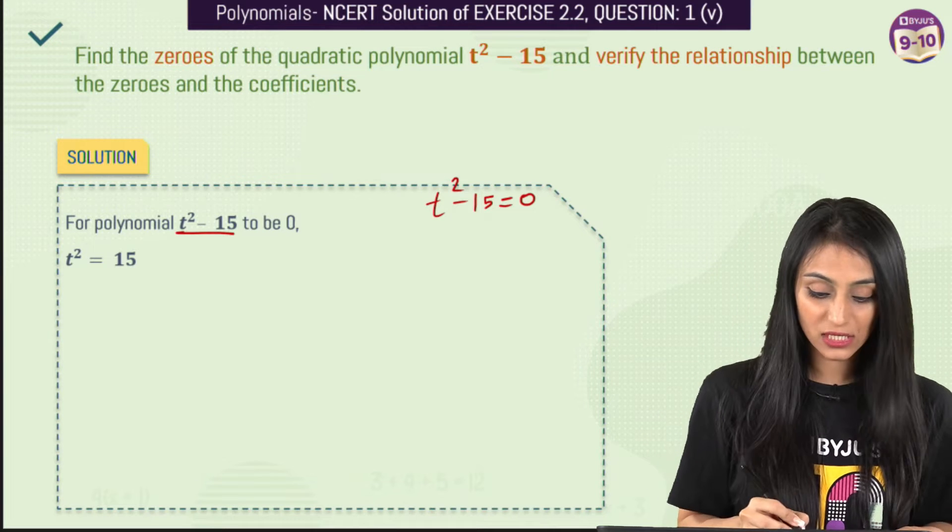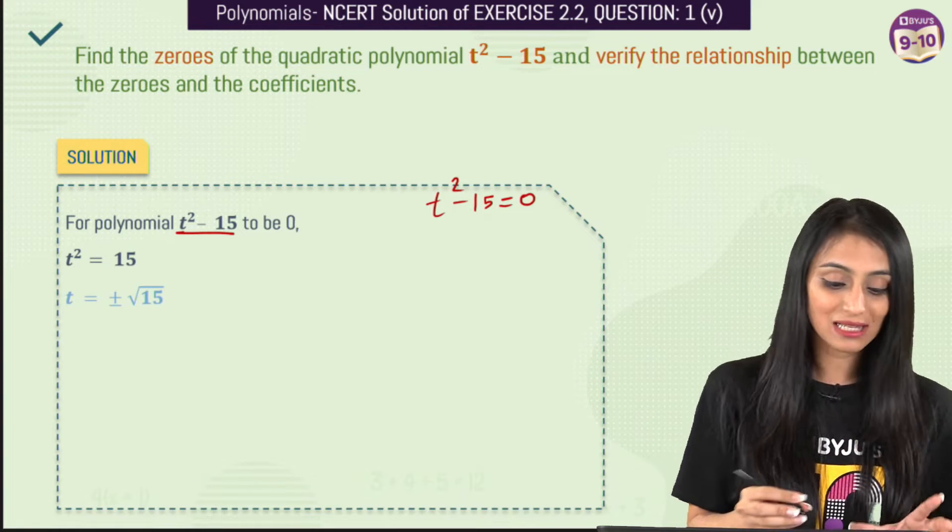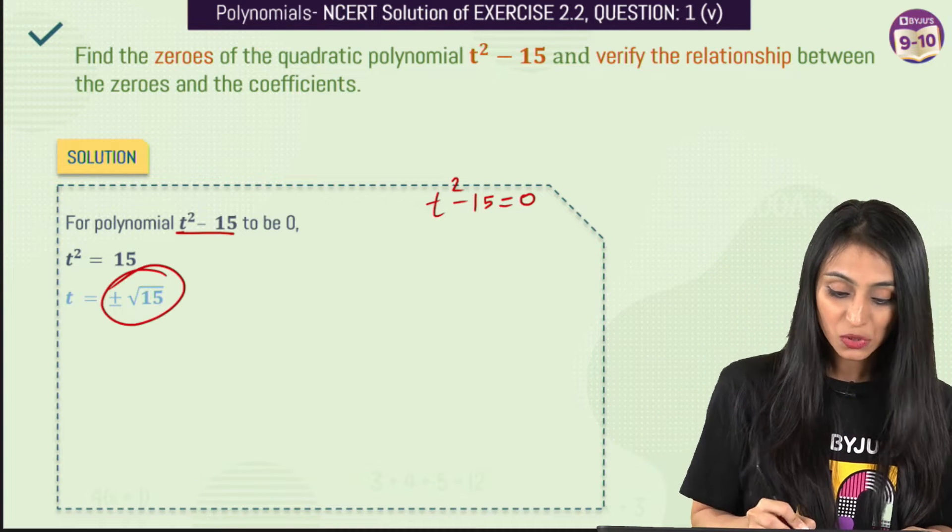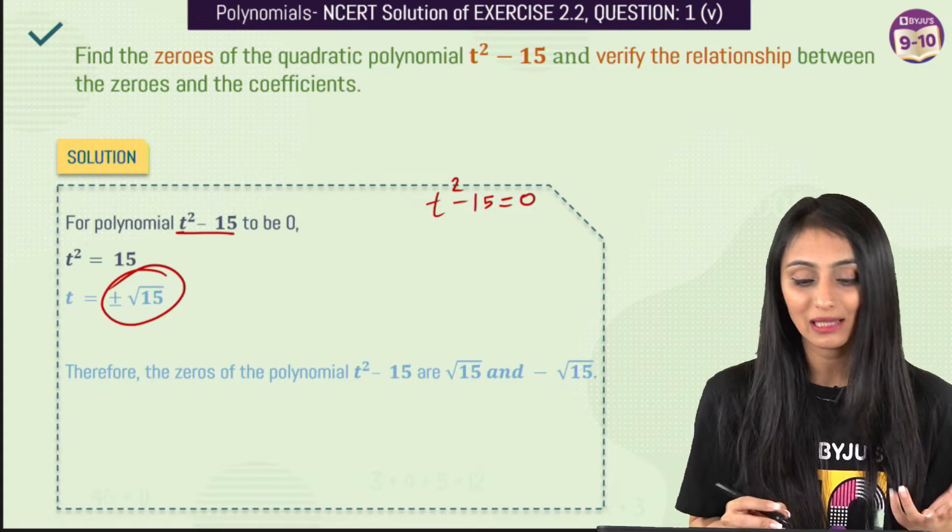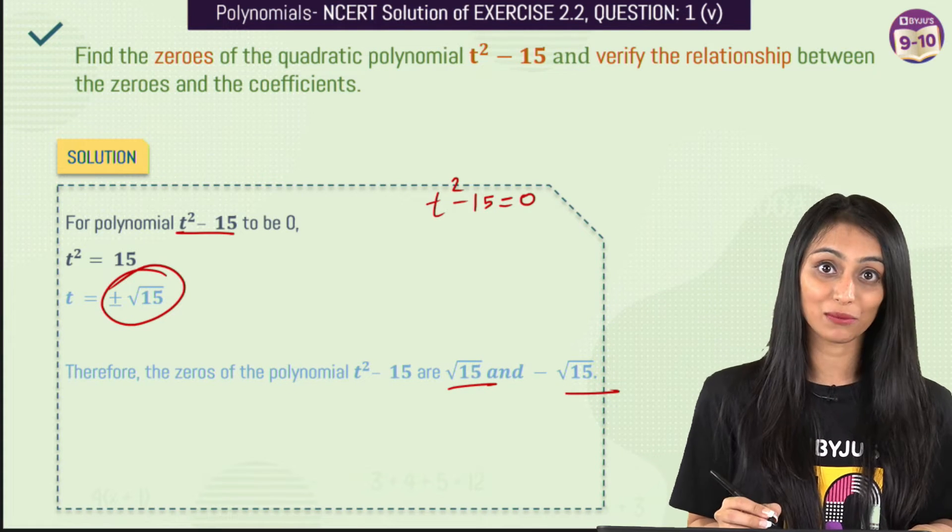When I take the square root of both sides, we get two values: t = ±√15. These ±√15 are the zeros for this quadratic polynomial.